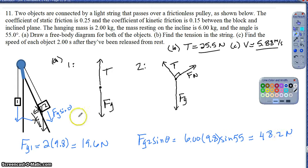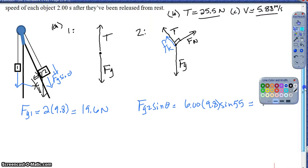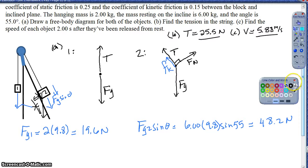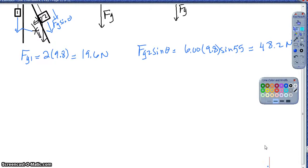Because the force down the ramp - 48.2 N - is greater than the force pulling down on object 1, if this system moves it will go down the ramp. So if there's friction involved, friction must act up the ramp since it always opposes motion. To decide if the system actually moves, I also want to find the frictional force. If it's at rest, I need to consider what the static frictional force could be.